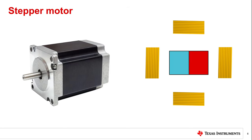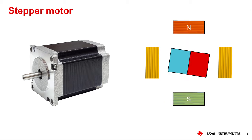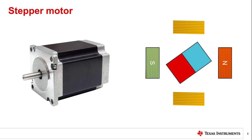Stepper motors are similar to brushless DC motors since they also handle commutation electrically. Stepper motors typically have only two phases, however steppers with three or more phases exist. The rotor in a stepper motor moves in discrete positional steps depending on the magnitude and direction of the currents in each phase winding.